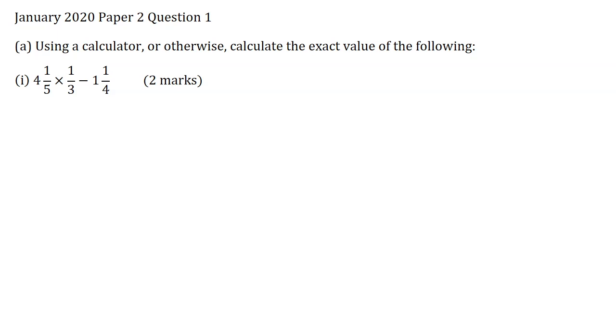In this video I will be solving January 2020, paper 2, question 1. Part A. Using a calculator or otherwise, calculate the exact value of the following. Part 1: 4 1/5 multiplied by a third minus 1 1/4 for two marks.